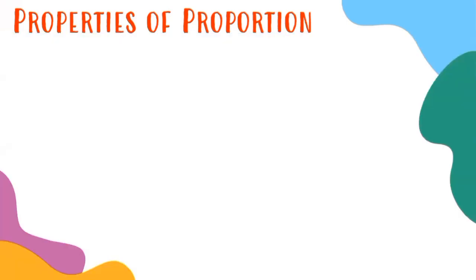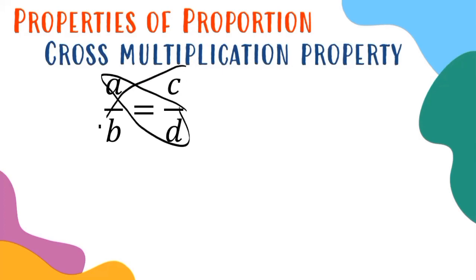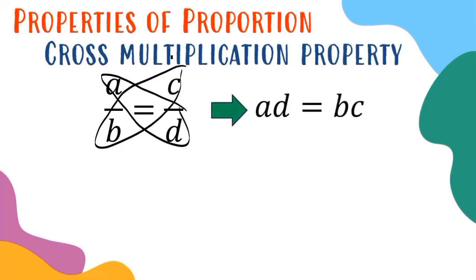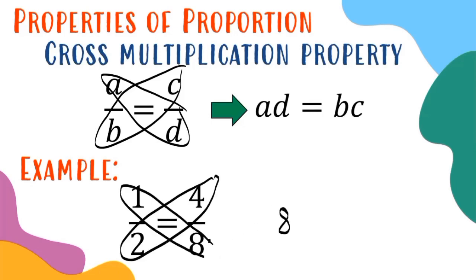Next, let us determine the different properties of proportion. The first is the cross multiplication property. Given a over b equals c over d, applying this property gives ad equals bc, or equivalently bc equals ad. For example, with 1/2 equals 4/8: cross multiplying gives 1 times 8 = 8 and 2 times 4 = 8.